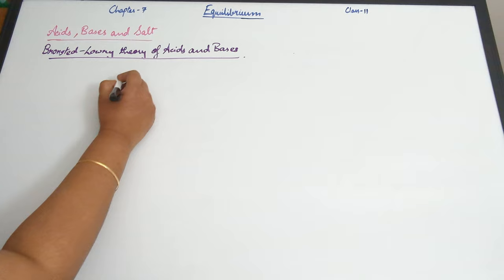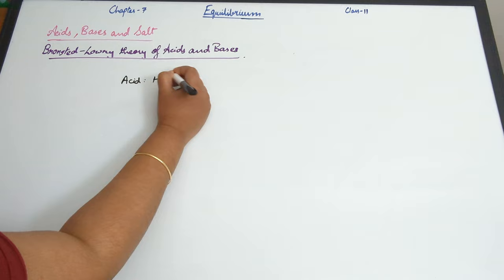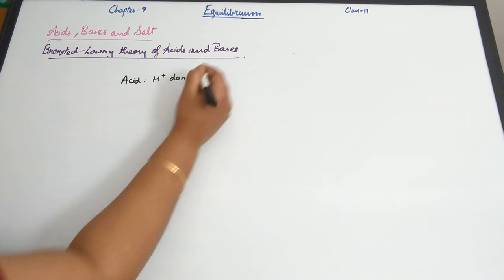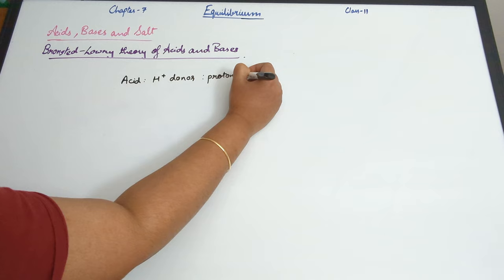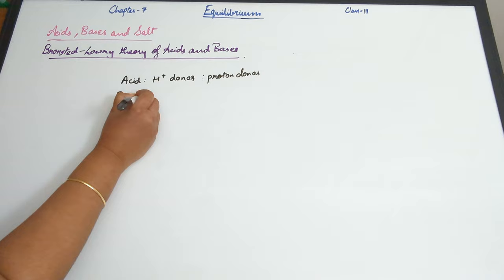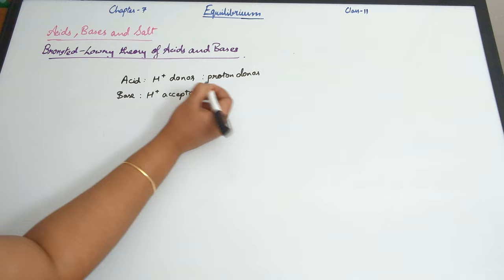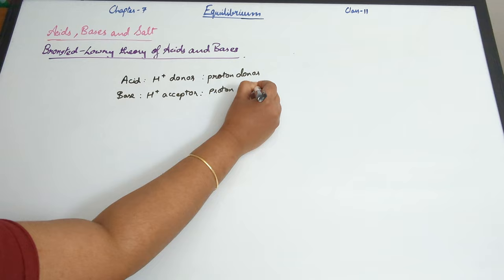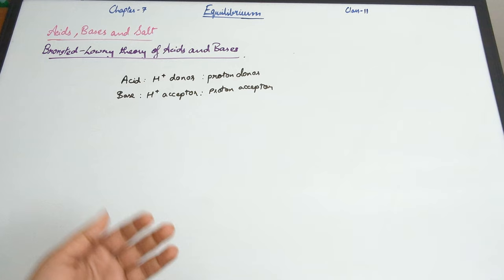According to this theory, an acid is an H+ donor, or can also be said to be a proton donor. A base is an H+ acceptor, or a proton acceptor. So acid donates protons whereas base accepts protons. That's the main thing they said.